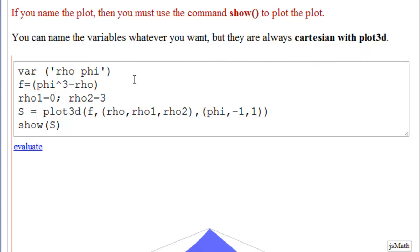So, just for the fun of it, I have named variables rho and phi, like polar coordinates. But because this is plot 3d, it will plot them Cartesian. So, here we've declared our variables rho and phi. And then we've defined our function, phi cubed minus rho. So, that's the same function as above because we're going to use Cartesian coordinates.